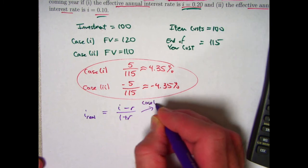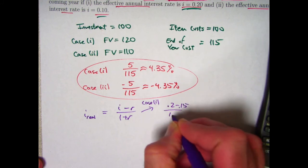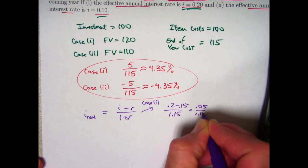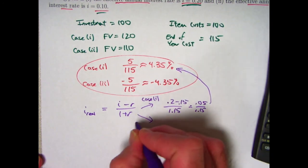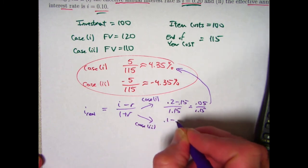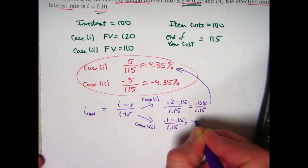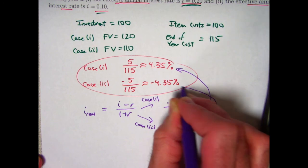So in case one, this is going to become 0.2 minus 0.15 over 1.15, 0.05 over 1.15, which is the same thing. And in case two, it's going to become 0.1 minus 0.15 divided by 1.15, negative 0.05 divided by 1.15, which will be the same thing that we got up here.